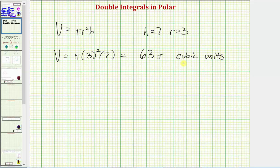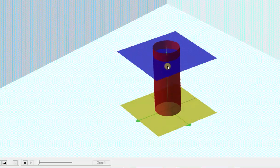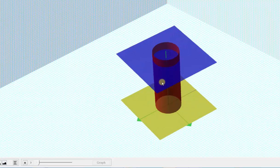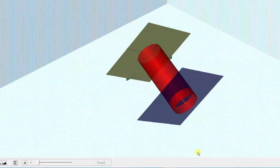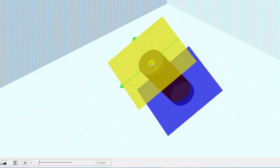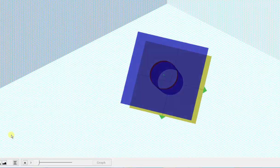So in most cases we won't be able to use a geometric formula to check our work, but in this case we can. Again, we just found the volume of the right circular cylinder below the blue plane and above the xy plane, graphed in yellow, over the region of integration, which was x squared plus y squared less than or equal to nine. I hope you found this helpful.